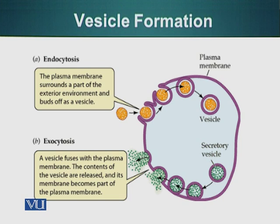Endocytosed vesicles are the ones which are formed at the plasma membrane. These vesicles are generally formed to engulf certain particles. These particles are engulfed and put into the vesicles and transported inside the cell. Other vesicles originate from, for example, the Golgi apparatus, in which different molecules are packed.